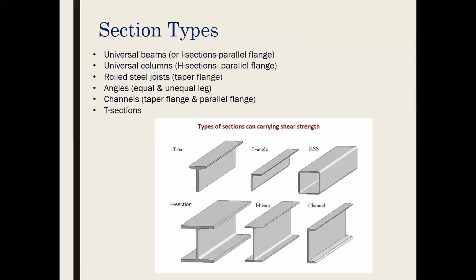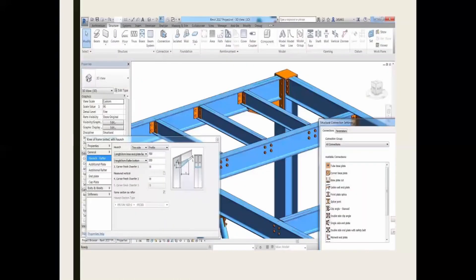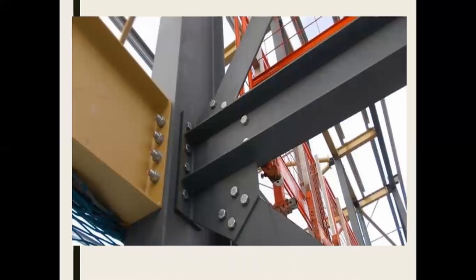Other section types include rolled steel joints, angles, channels, and T-sections. Connections refer to how sections are bolted or welded together. Connection types include pin or hinge, base, and pocket connections, using either bolts or welding as materials. These can be modeled in software such as Revit or Procon.